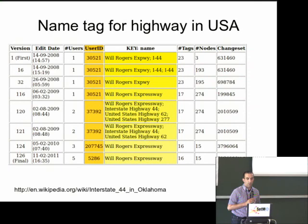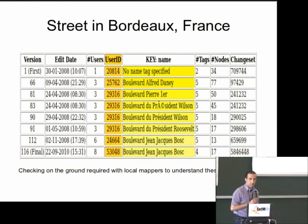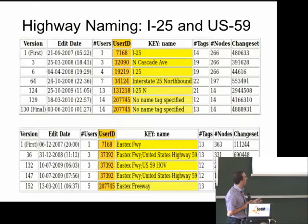A highway tag example from the USA — there's nothing actually wrong with it, just a lot of additional things present, and then we settle on 'Will Rogers Expressway.' In Bordeaux, France, some problems appear within the same changeset but are sorted out. The key thing is we need to check with on-the-ground mappers to understand what these changes are — we can't just say they're bad news because they come up in our results.